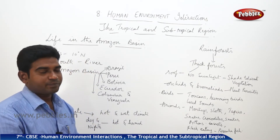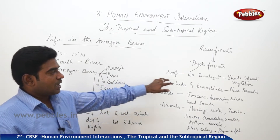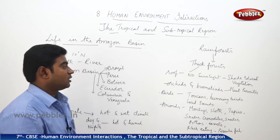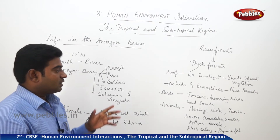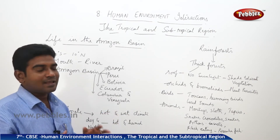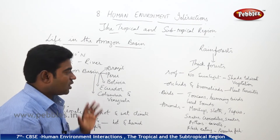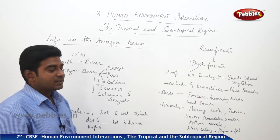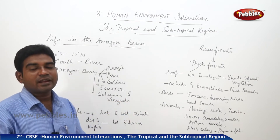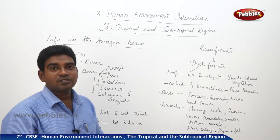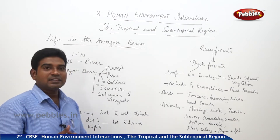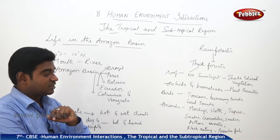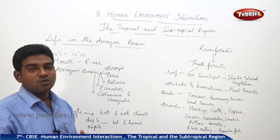Only shade-tolerant vegetation can grow here. The plants grown include orchids and bromeliads, which grow as plant parasites. The birds found here are toucans and hummingbirds, which make loud noises unlike other birds. The animals include monkeys, sloths, and tapirs — which are ant-eating tapirs. There are also different kinds of reptiles like snakes, crocodiles, and pythons, different varieties of insects, and a variety of flesh-eating fish called the piranha.